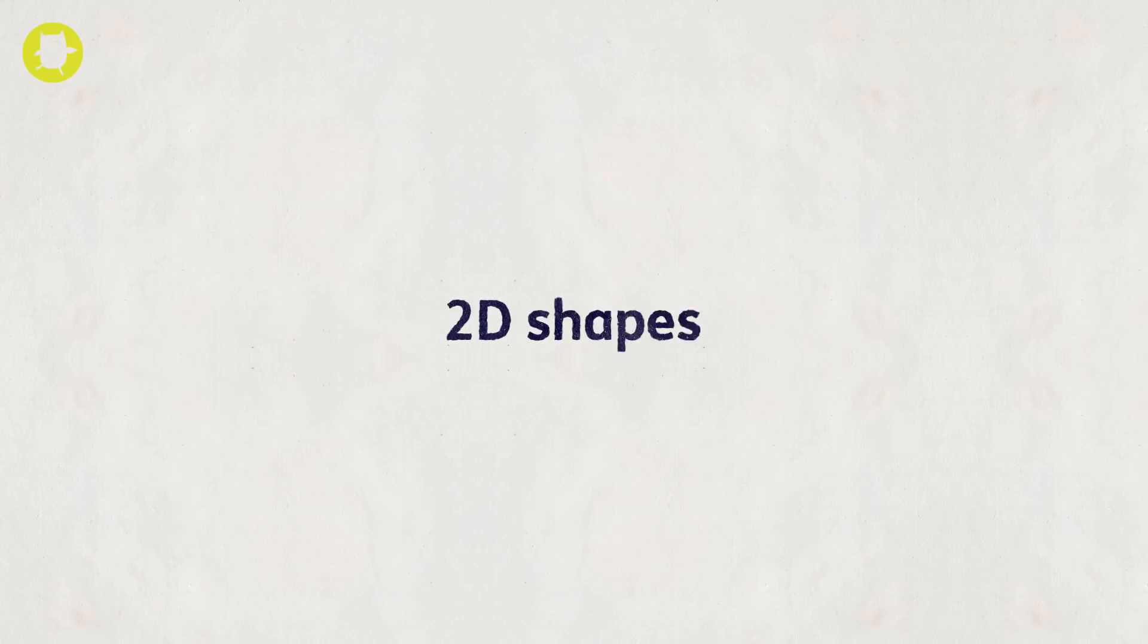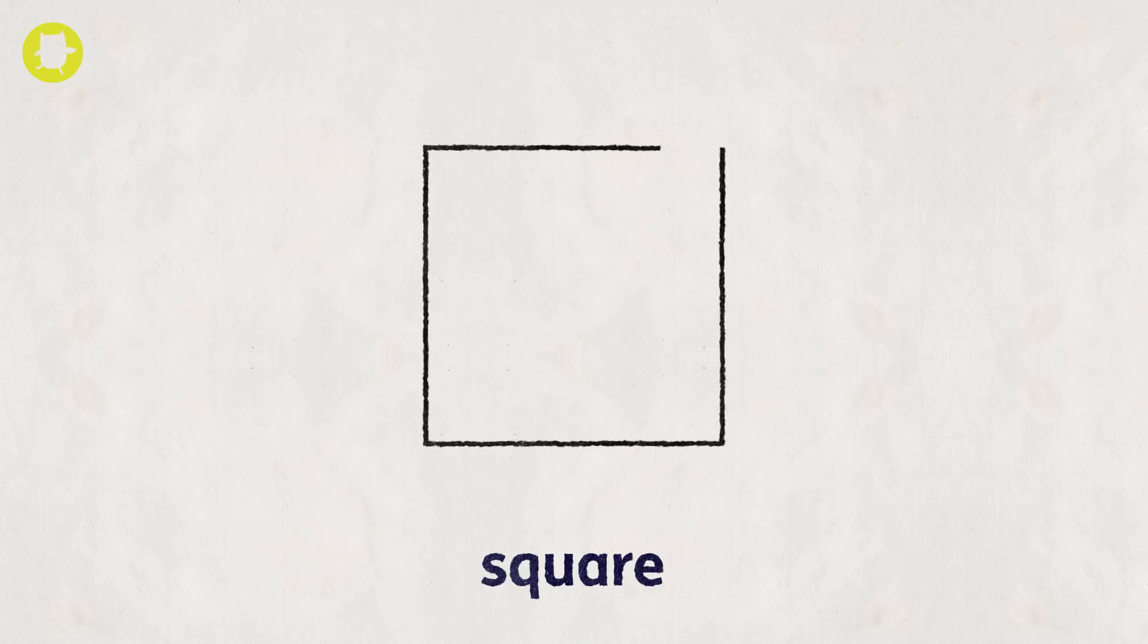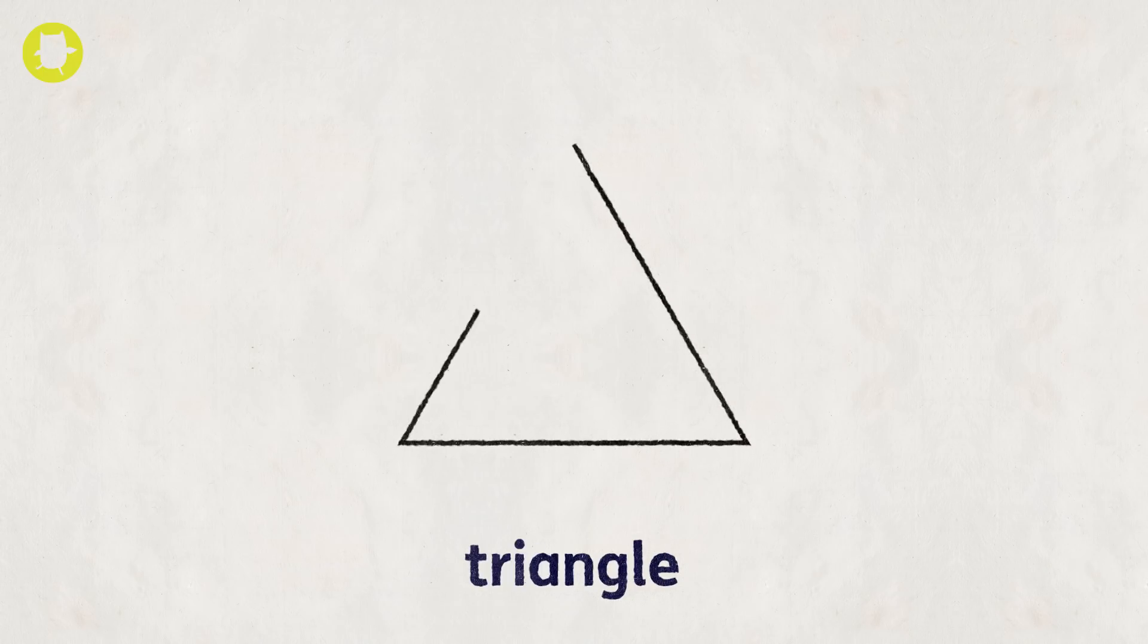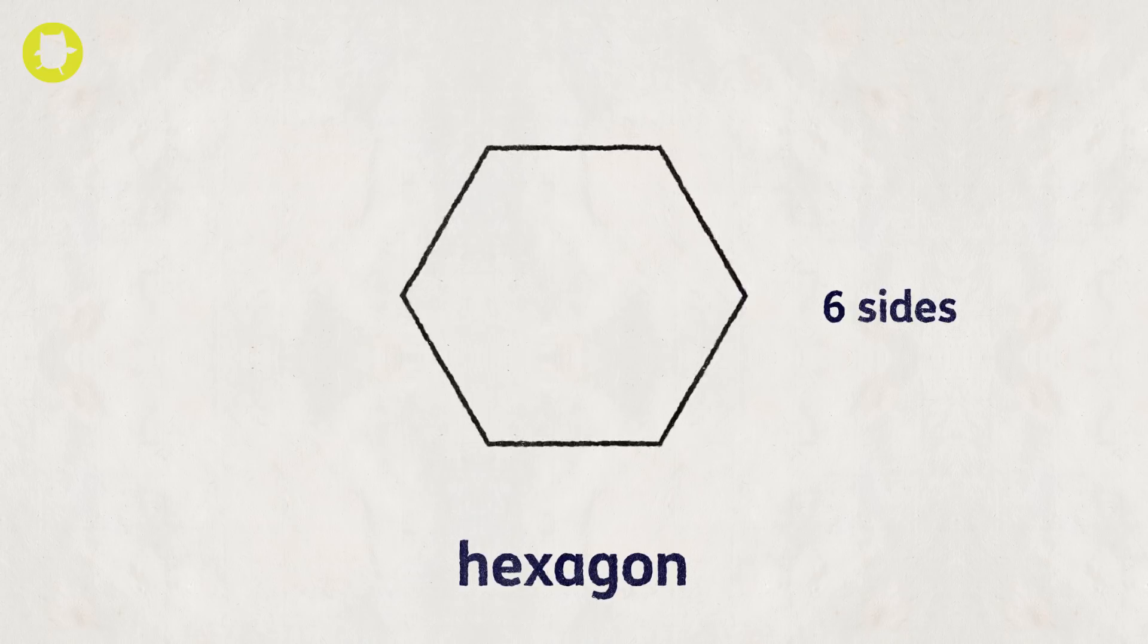Two-dimensional or 2D shapes: circle, square, rectangle, triangle, pentagon, hexagon, octagon, and nonagon.